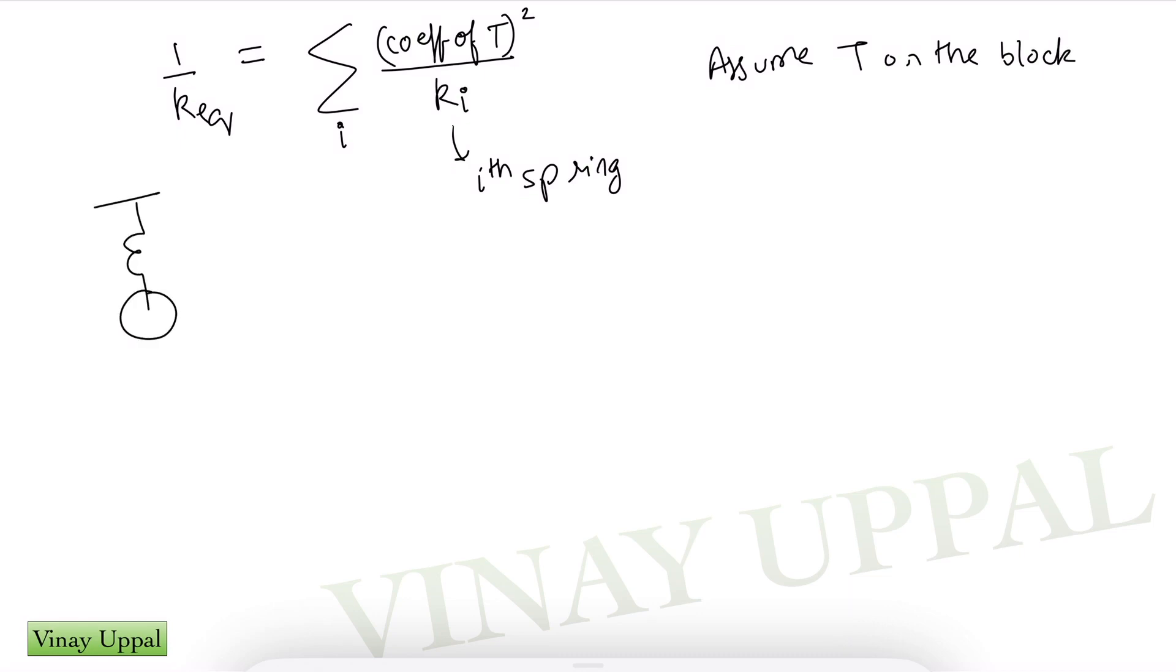So for example, in the previous example, I had tension t on the block. So the left spring will also be t, the upper spring would be 2t. So 1 by k equivalent according to the formula above would be summation of the coefficient of t in the left spring is simply 1, the tension in the left spring is t. So 1 squared divided by the spring constant k1 plus what is the coefficient of tension t? The coefficient of t in the upper spring is 2t, so the coefficient is 2. So 2 squared by the spring constant of the upper spring which is k2.